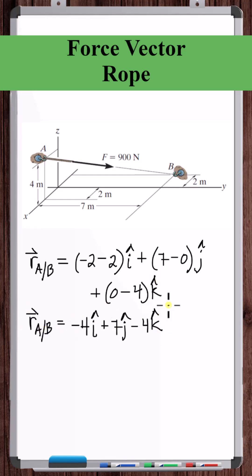Here's the position vector from A to B. What is the magnitude of this vector? 4 squared plus 7 squared plus 4 squared is 81. Square root of 81 is 9.